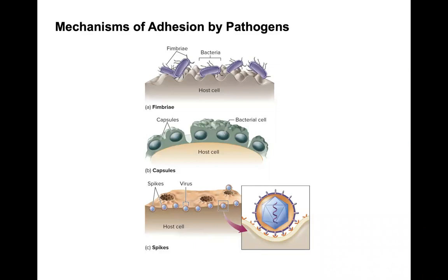Capsules can also help with adhesion. Viruses will have spikes that attach to the host cell membrane. For example, in an organ like the bladder where urine creates a flushing action, E. coli — which tends to inhabit the bladder and cause infections — must adhere to the surface or it would get washed away. Part of the ability to cause infection is that the organism must adhere.